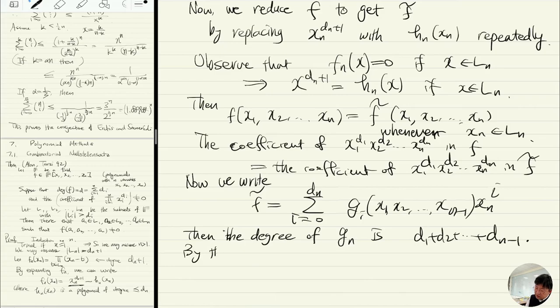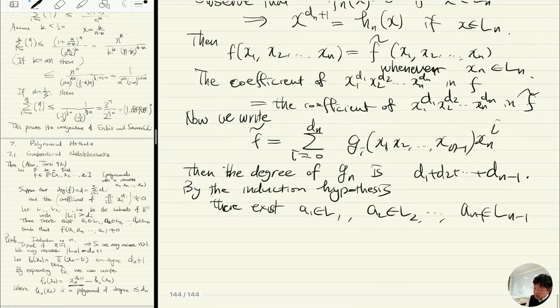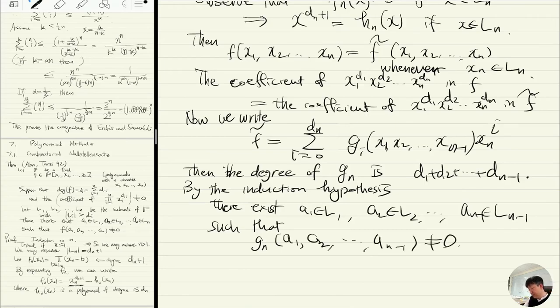So by the induction hypothesis, there exist a1 in L1, a2 in L2, ..., an-1 in Ln-1 such that gdn(a1, a2, ..., an-1) is nonzero.